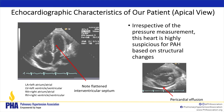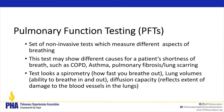Looking at echocardiogram images, we examine characteristics such as a flattened septum — the dividing wall of the heart — which is something we key into when suspecting pulmonary hypertension. Even without pressure measurements, structural changes alone can make a heart highly suspicious for PH. We also look for pericardial effusion — a small area of fluid around the heart — among many other findings.